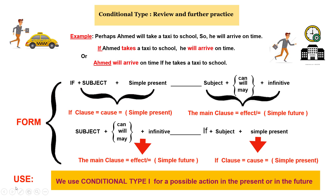Finally, when do we use conditional type 1? We use conditional type 1 for a possible action in the present or in the future. When you say 'if Ahmed takes a taxi,' are you sure he is going to take a taxi? No — perhaps yes, perhaps no. That's why we say conditional type 1 is about something possible. It's probable; we are not sure.